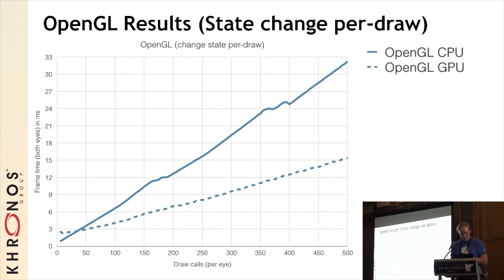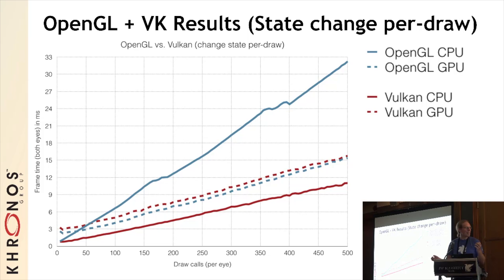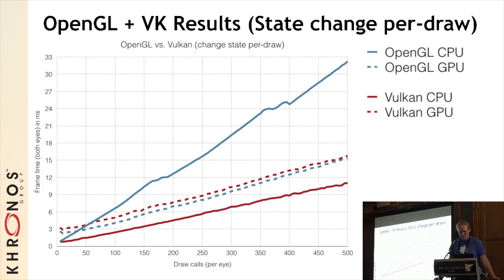Now let's overlay Vulkan — and there it is. The solid red line is CPU and the dotted red line is GPU. A couple things jump out. First of all, the GPU times are nearly identical, which we expected. In fact, Vulkan came out a little slower overall by a constant factor. An earlier speaker mentioned that GL drivers have had more time to mature and optimize. The hardware vendor and I traced this to a driver problem which has since been fixed, but I didn't have time to rerun the test. But more importantly, there's a huge improvement on the CPU side, and this was frankly pretty surprising.